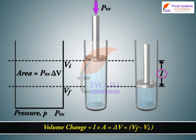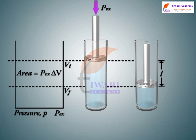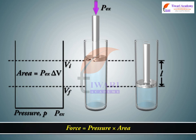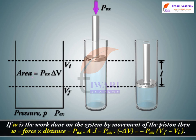Then, volume change is equal to L × A = ΔV = Vf − Vi. We also know force = pressure × area. Therefore, force on the piston = Px × A. If W is the work done on the system by movement of the piston, then W = force × distance = Px · A · L = Px · (−ΔV) = −Px(Vf − Vi).